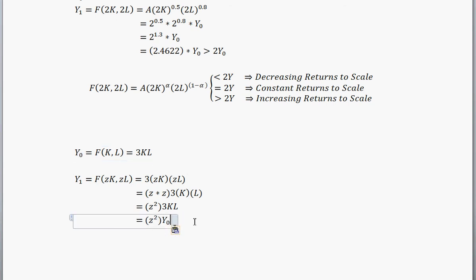And then, Z squared is definitely greater than Z. So, we know this is increasing returns to scale. Okay, thanks. Bye.